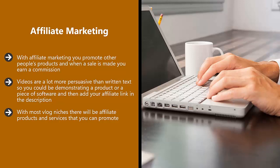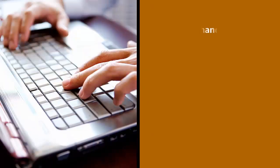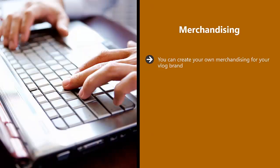With most vlog niches there will be affiliate products and services that you can promote. Use Google or another search engine and type in the type of product or service followed by 'affiliate program' — for example, 'makeup affiliate program.' You can promote physical products and digital products too. Digital products would normally be software, a how-to guide, training videos, and so on. It can be harder to make a sale with digital products, but the commissions are usually a lot higher than with physical products.